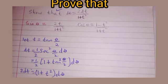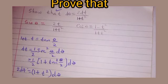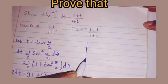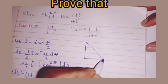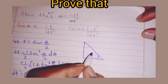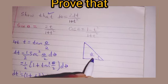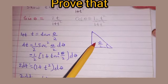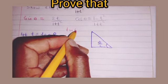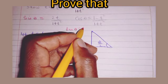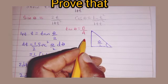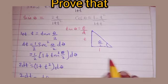Now to do the other parts, we are going to draw a right-angle triangle. We label this angle θ/2. Knowing that tan θ = opposite/adjacent, our opposite here will be t and our adjacent is 1.